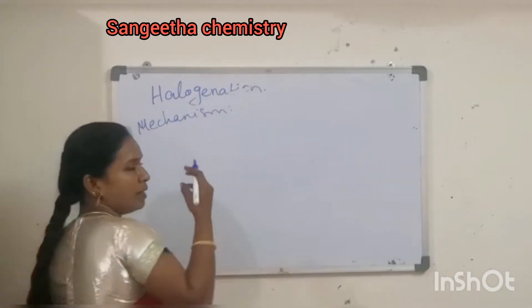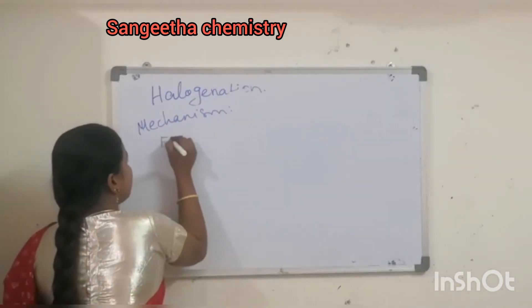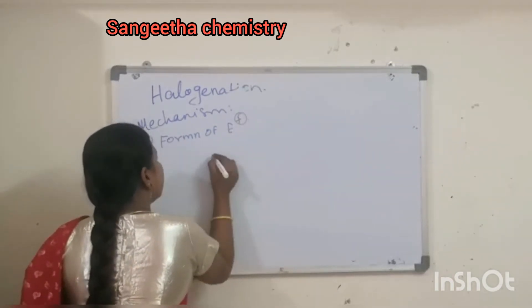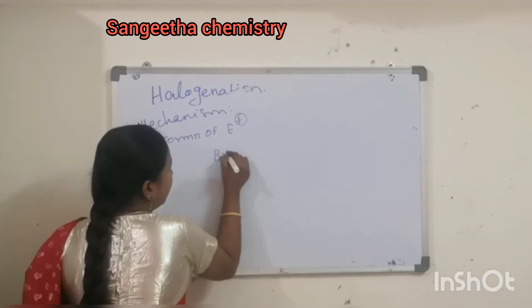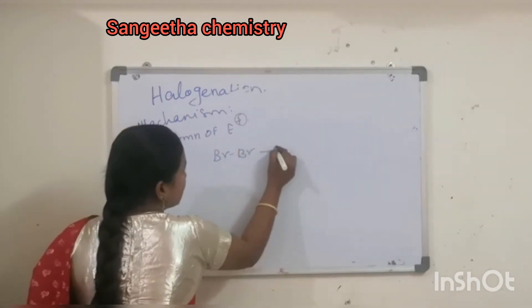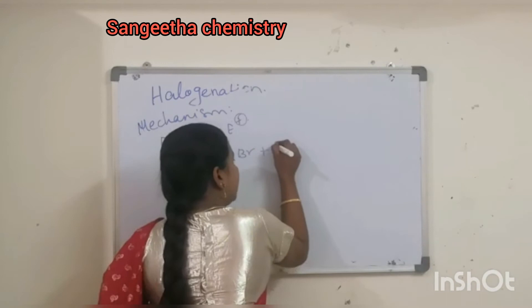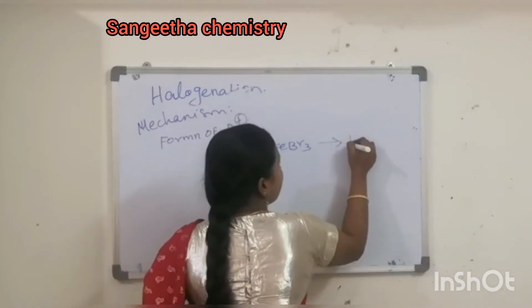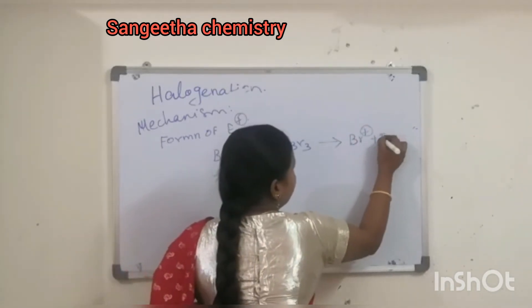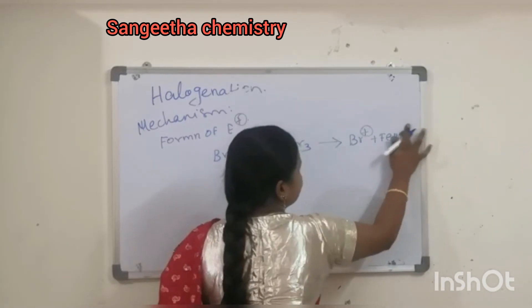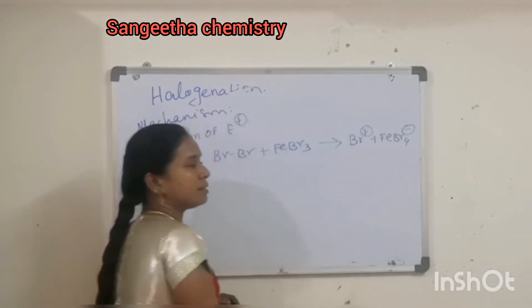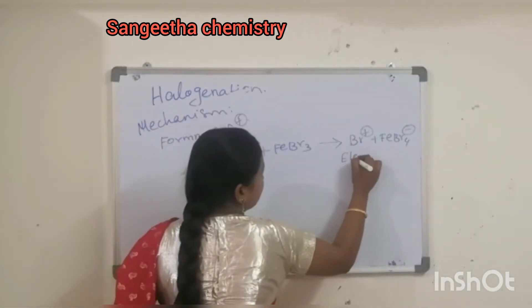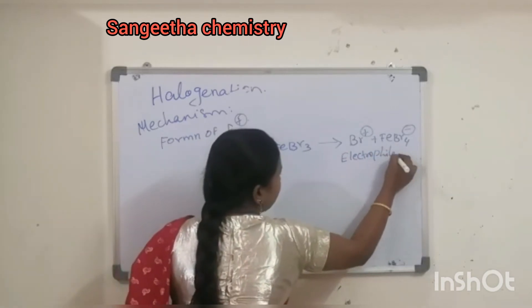First step is formation of electrophile. So reactant Br2 is going to be reacting with FeBr3. It is going to form Br plus and FeBr4 minus. It is going to form Br+. So this is the electrophile.